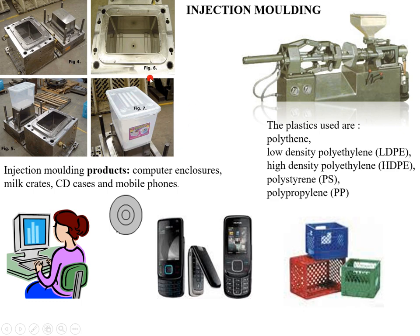This basket is a final product of injection molding. You can see the molds — depending on what shape you want, you can prepare those molds. All thermoplastics can be used, for example LDPE, HDPE (different types of polythene), polystyrene, and polypropylene. All these are thermoplastic polymers which can be molded by injection molding.